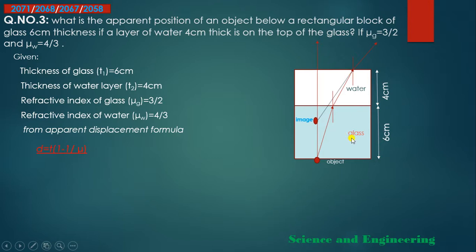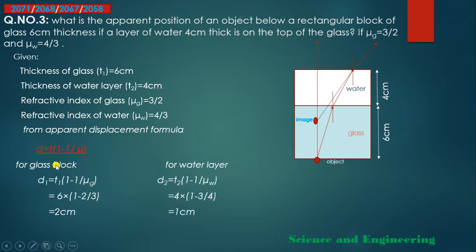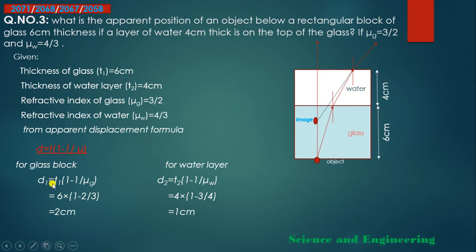There are two types of medium here: first is glass, second is water. For glass: D1 = T1 × (1 − 1/μg) = 6 × (1 − 2/3) = 6 × 1/3 = 2 cm. For water: D2 = T2 × (1 − 1/μw) = 4 × (1 − 3/4) = 4 × 1/4 = 1 cm. Total apparent displacement from the bottom = D1 + D2 = 2 + 1 = 3 cm.